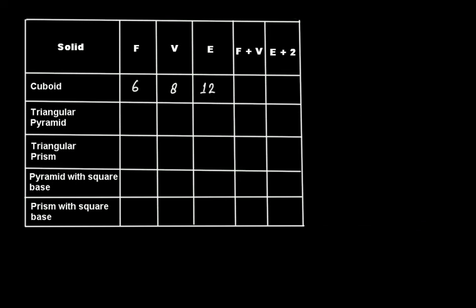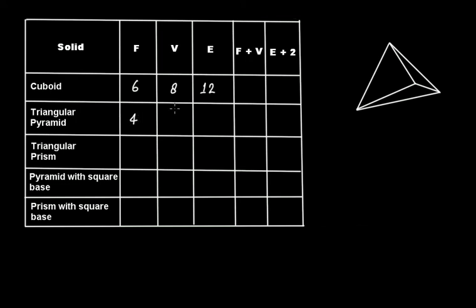Next is the triangular pyramid. In a triangular pyramid it has a triangular base. How many faces does a triangular pyramid have? It has four faces: the bottom base and the three triangular faces made on those edges. So it has four faces. How many vertices? It has one, two, three, and the common vertex — that is four vertices. How many edges? One, two, three, four, five, and six — so six edges.